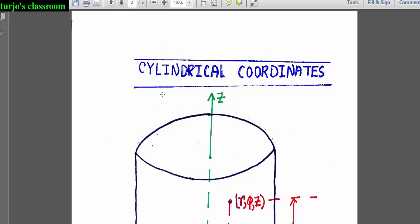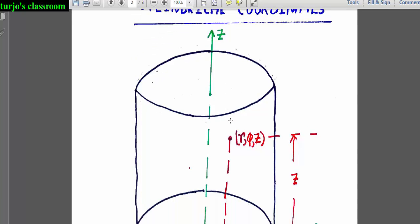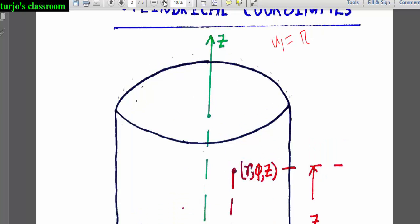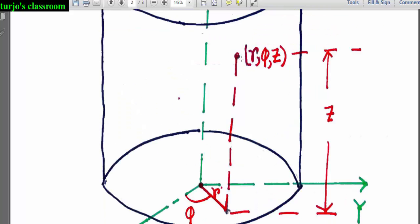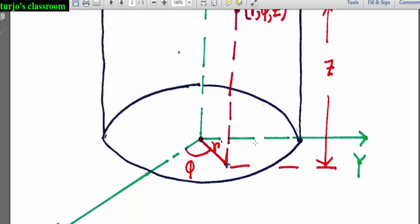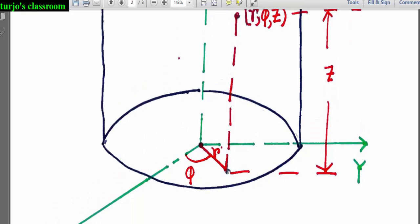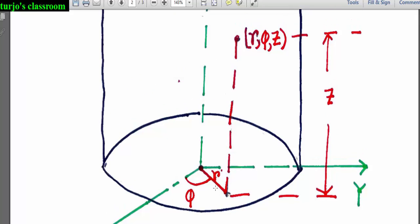First we have cylindrical coordinate system. In cylindrical coordinate system the space coordinates are r, phi, and z. That is u1 is r, u2 is phi, and u3 is z. Here's our point r, phi, and z. There's a perpendicular line drawn from the point to the xy plane.